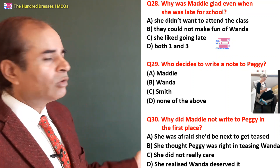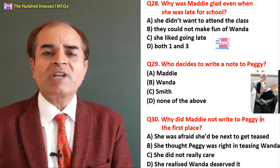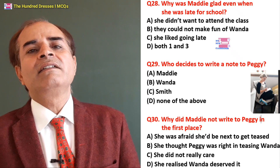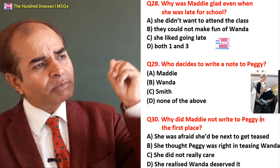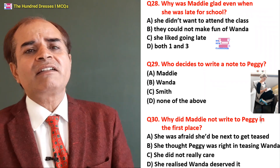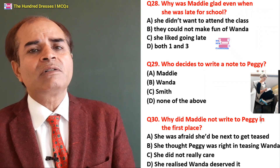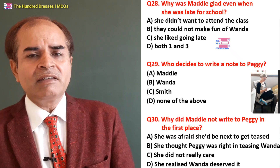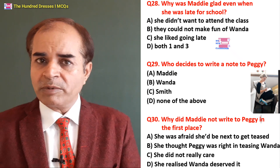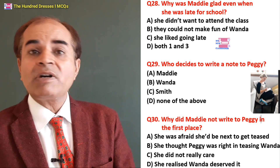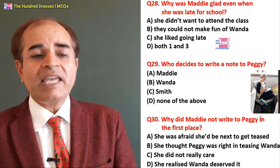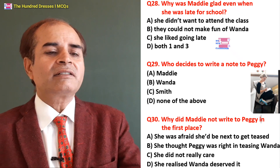Twenty-ninth question: Who decides to write a note to Peggy — to tell her she was doing wrong? Maddy? Wenda? Smith? None of the above? It was Maddy. A is the right answer.